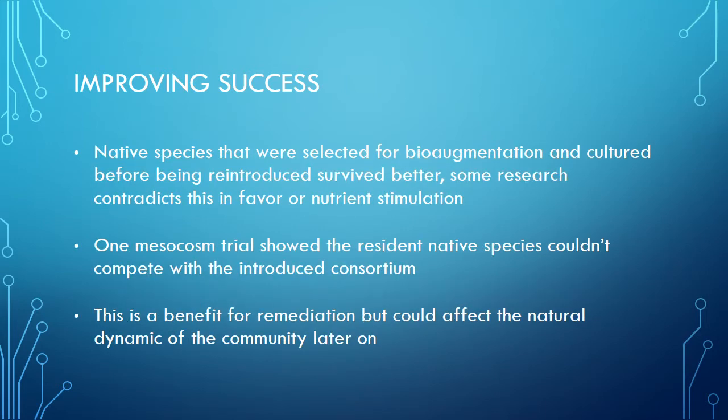Another way to increase success is to use a species native to the site that has been hand-selected for augmentation. This strain can be cultured and then reintroduced, and studies show that they often survive more successfully than their introduced non-native counterparts. One mesocosm trial showed an introduced consortium was able to out-compete the native species so that they could successfully remediate a habitat, but it was unknown what the future impact on the community would be.